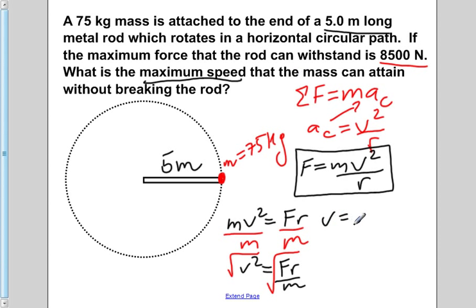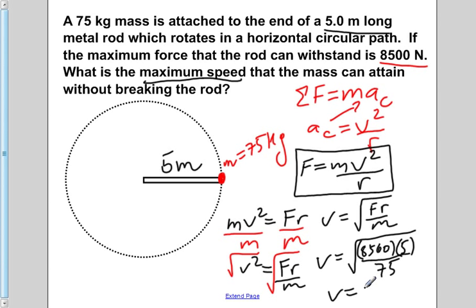This gives us the velocity is equal to the square root of the force times the radius divided by the mass. If we now plug in all of our given values, we would find that v equals the square root of 8500 newtons times a radius of 5 meters divided by a mass of 75 kilograms. If we now multiply and divide and then take the square root of that, we would find that our velocity would be approximately 23.8 meters per second.